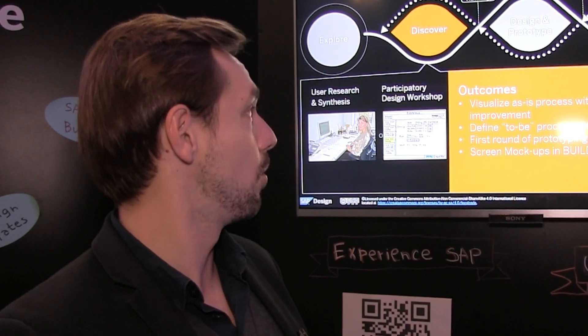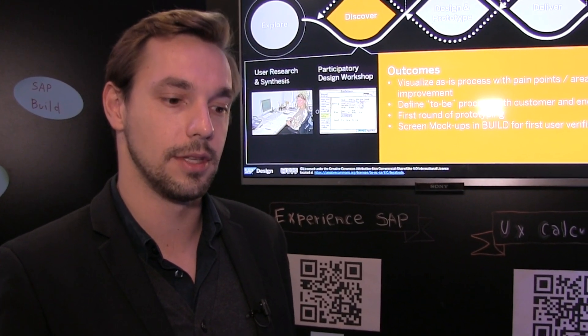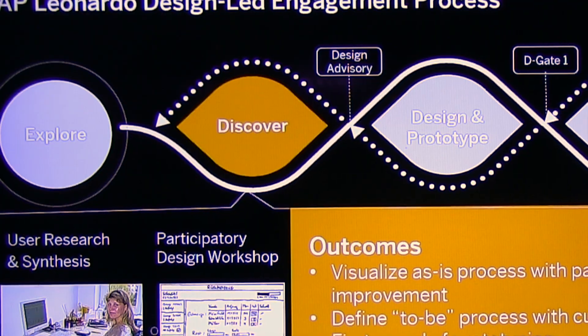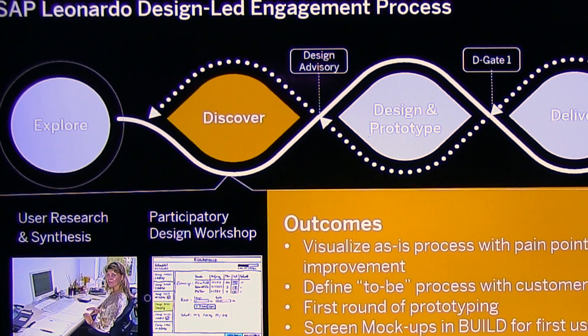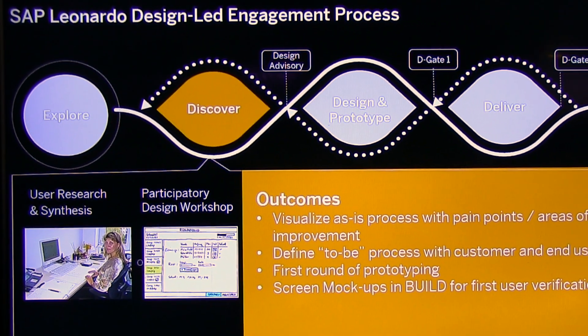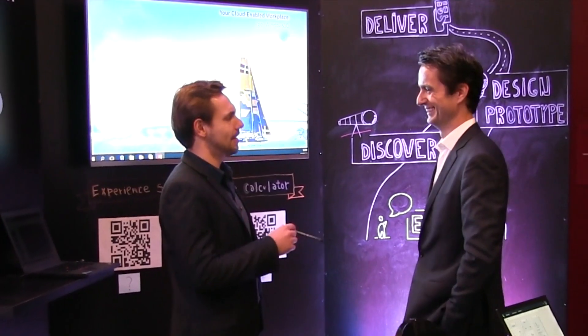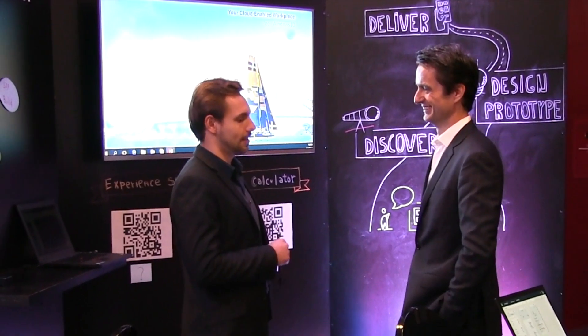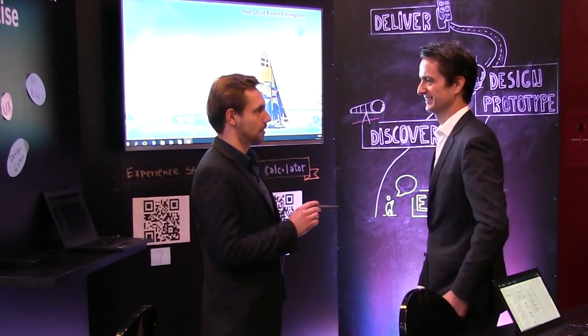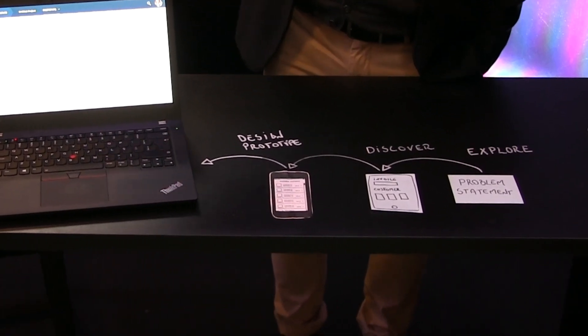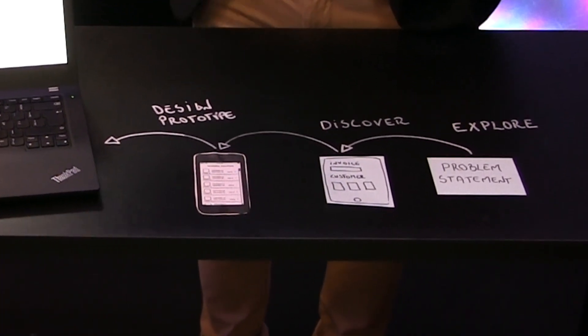After that we go to a discover phase where the focus is to go on site with the customer and validate those biggest challenges, and understand those business processes. While SAP is on site, everyone from across your organization gets to see how things really are, especially in other departments. This also helps give people an idea of how things could be. The discover phase produces the first round of prototypes, usually mock-ups on paper.